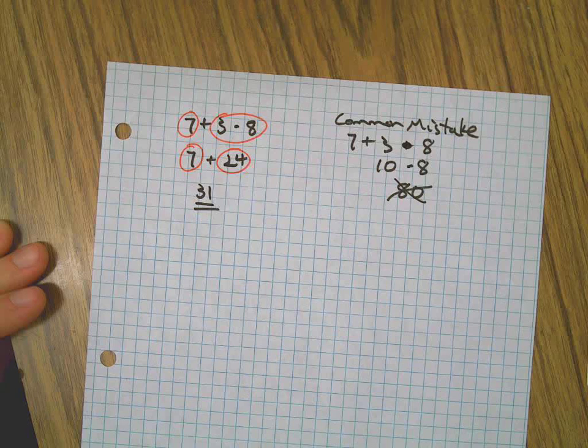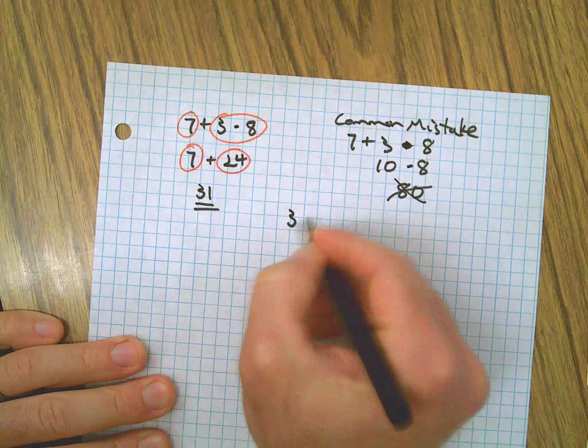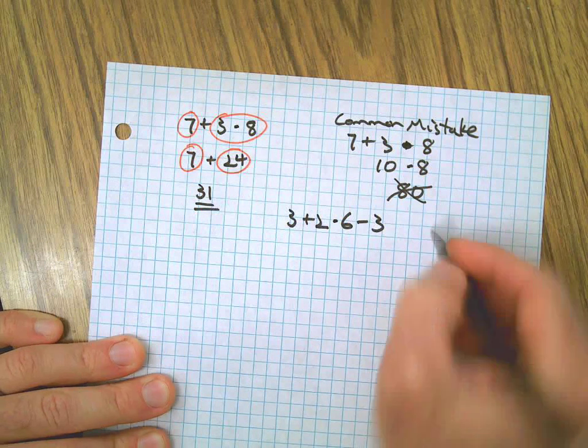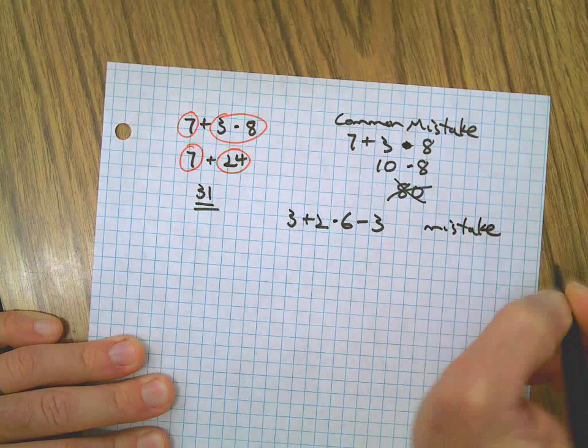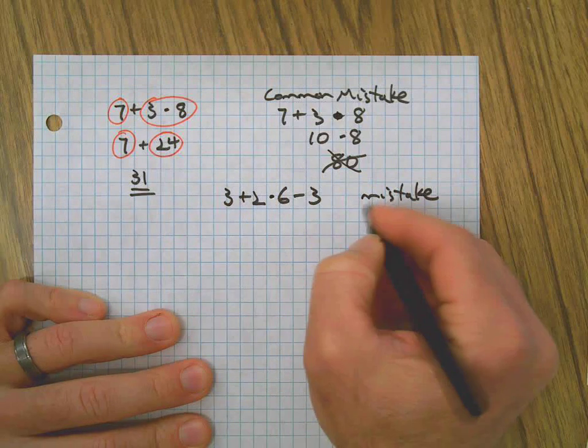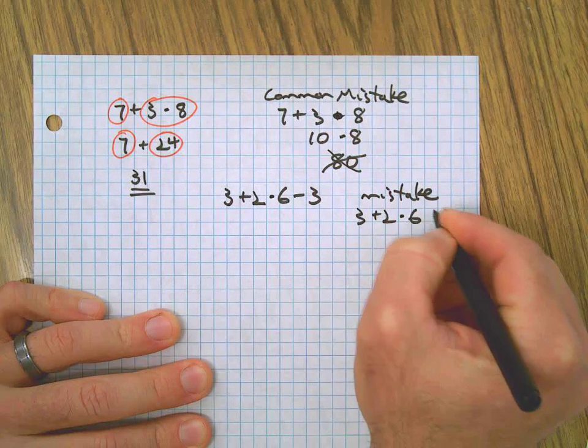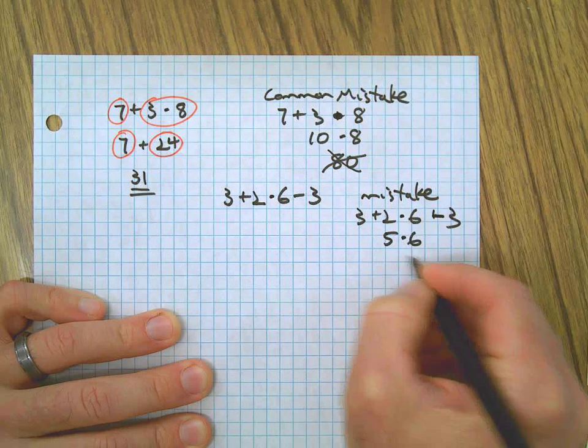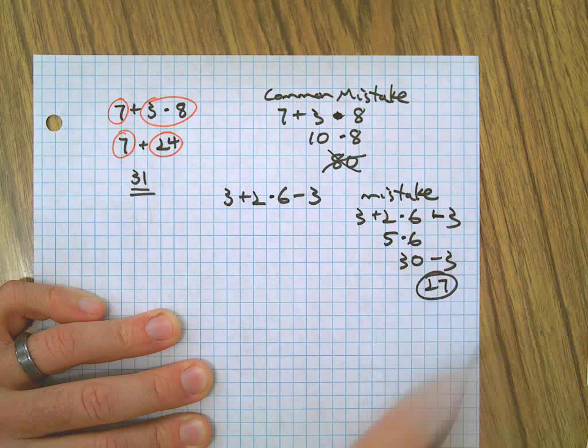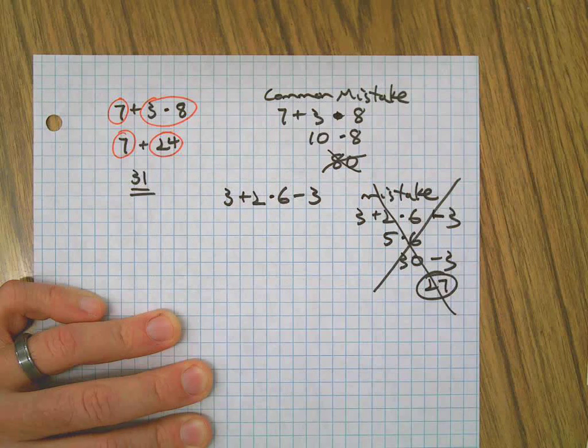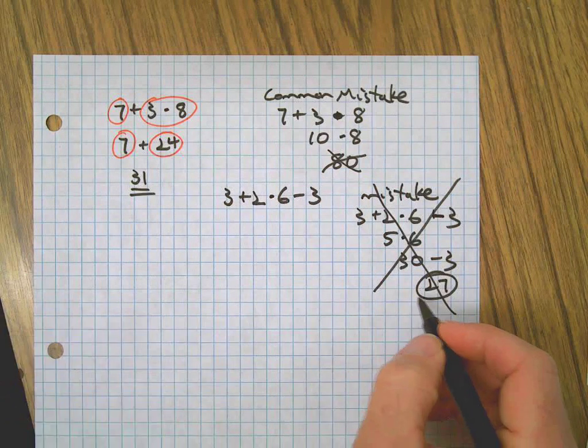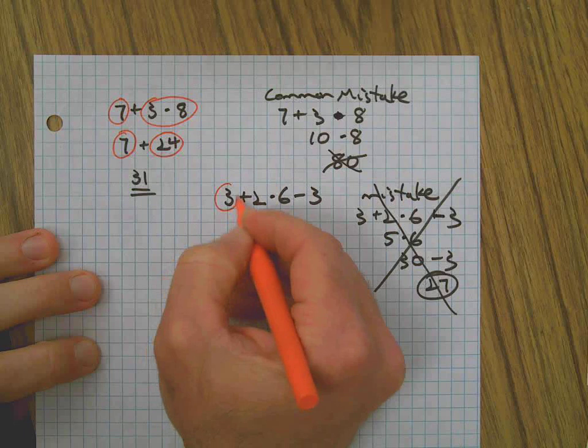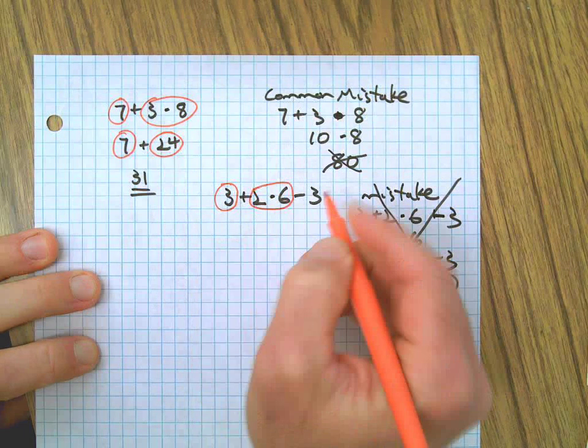Let's do another problem. Here's another one: 3 plus 2 times 6 minus 3. Here's a mistake: 3 plus 2 which is 5, and then 5 times 6 which is 30, and then 30 minus 3 which is 27. That's wrong. But if this were a multiple choice test, that would be one of your choices and we want to make sure you know that's wrong.